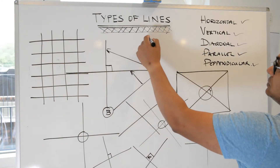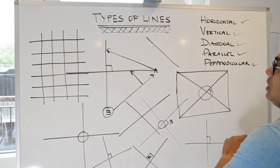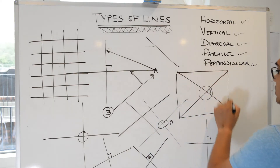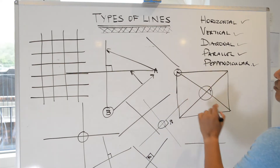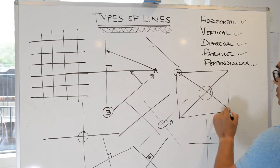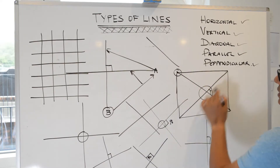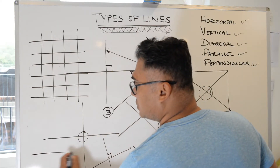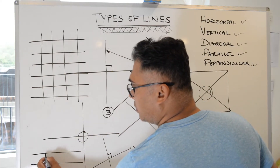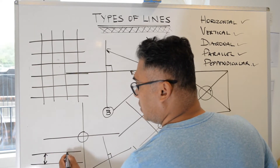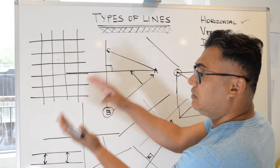Diagonal lines move in a diagonal, slanted direction. In shapes, such as this rectangle, they run from one corner to another corner — one diagonal there, another diagonal there. And then parallel lines — parallel lines never meet. They are equidistant regardless of the gradient of the line.